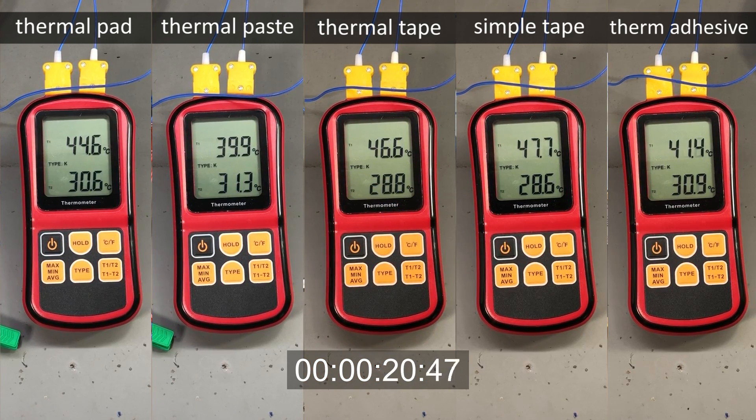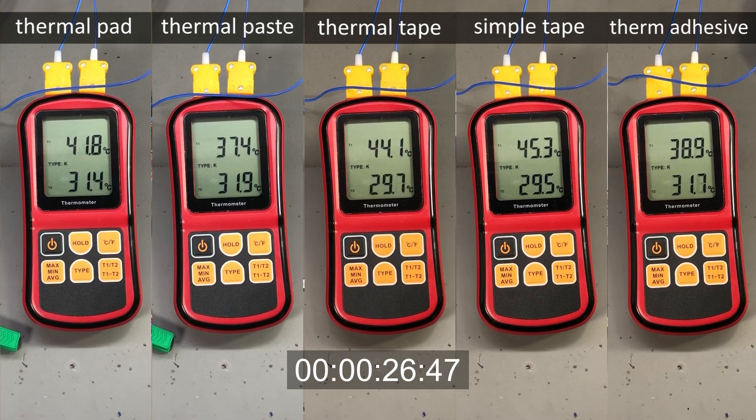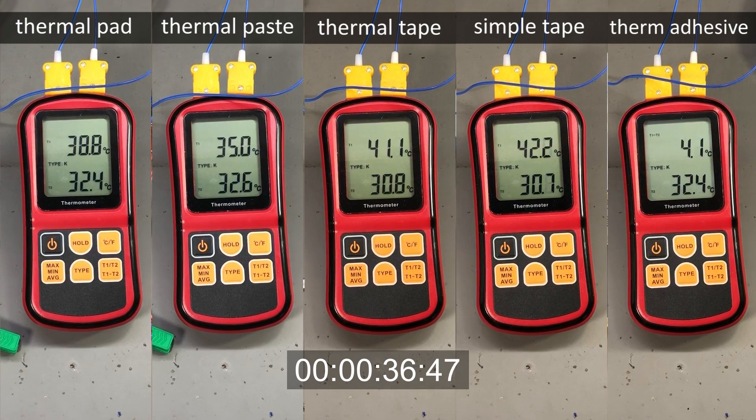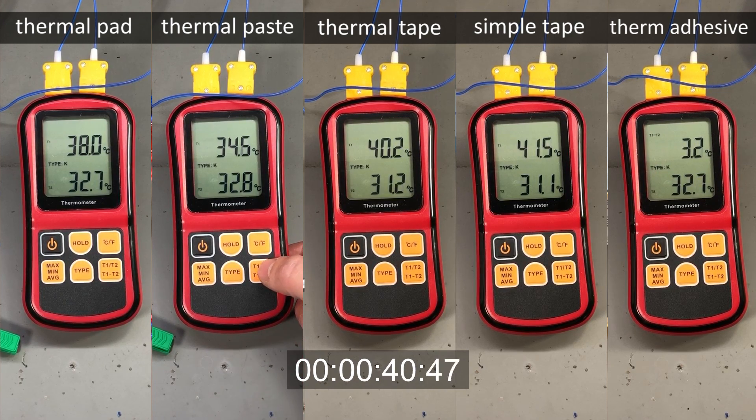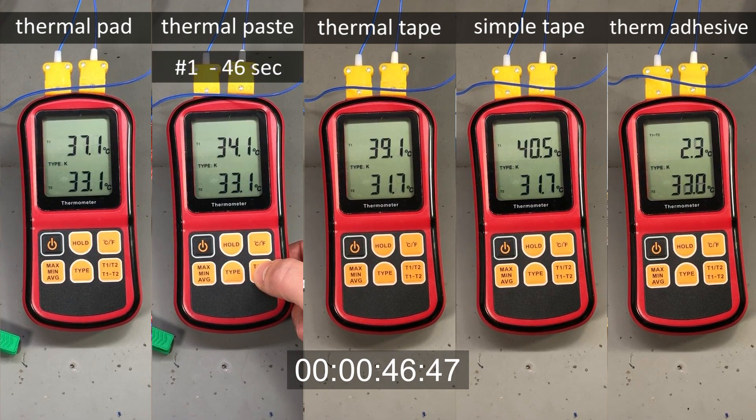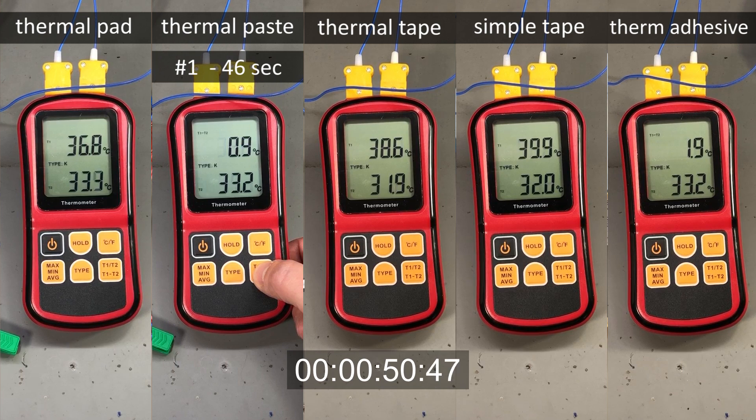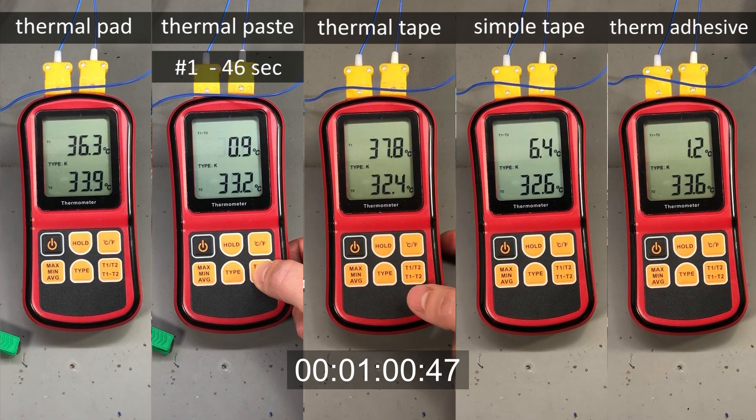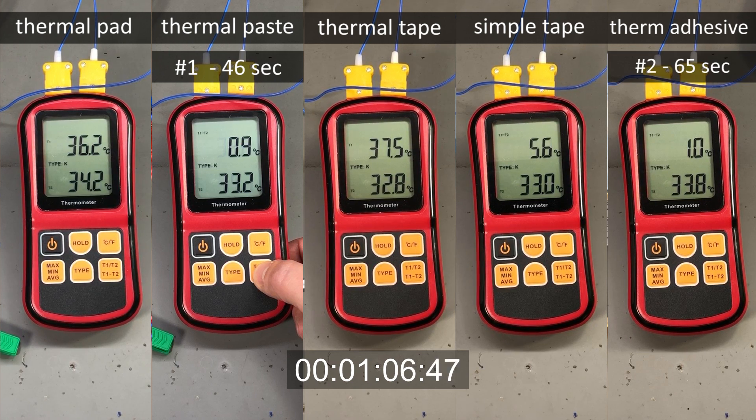The speed of the video is 3x and as you will see on video, the thermal paste is the first to equalize temperature between the transistor and heat sink down to about 1 degree Celsius difference. The second one was the thermal adhesive, the silicone stuff, the white paste, and the third one was the thermally conductive pad. The thermal double-sided tape as well as the normal double-sided tape performed equally worse, and after 2 minutes there was still 2 or 3 degrees Celsius of difference between the heat sink and transistor.